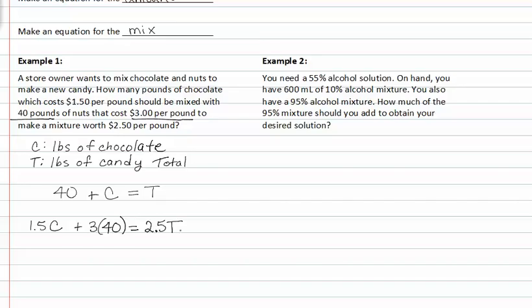If we now have two equations, we can now substitute this value, these values in for T here. Then everything will be in terms of C.